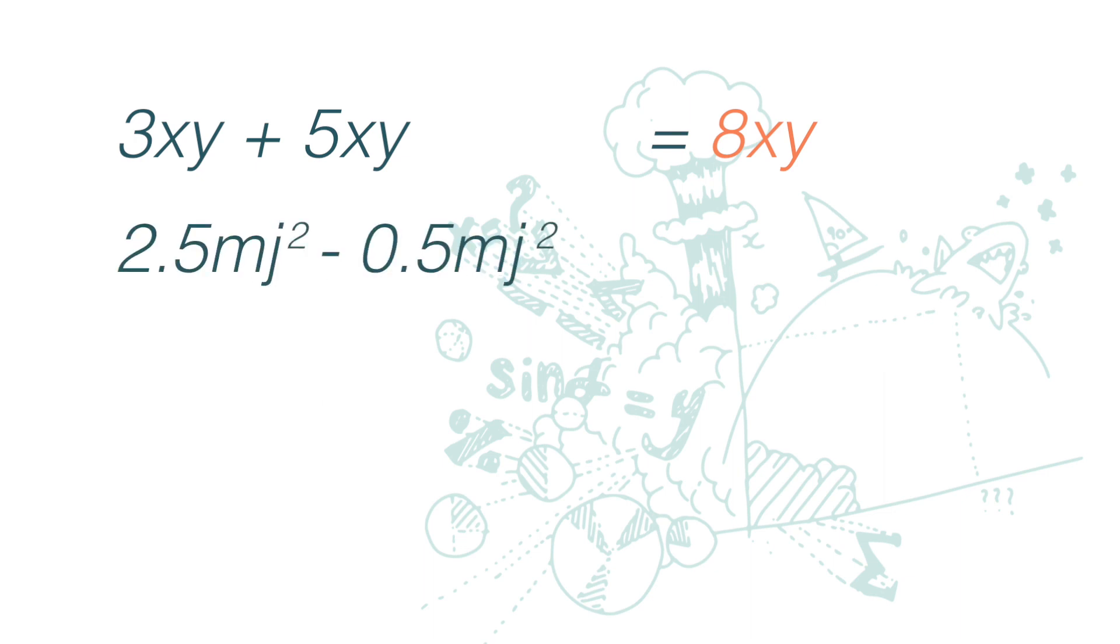2.5mj squared minus 0.5mj squared. Again they are also like terms so we can subtract 0.5 from 2.5 and we get 2mj squared.